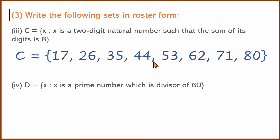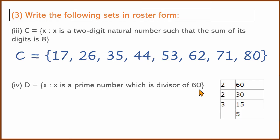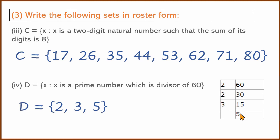Fourth: x is a divisor of 60. We use prime factorization. 60 = 2 × 2 × 3 × 5. Then 1, 2, 3, 4, 5, 6, 10, 12, 15, 20, 30, 60 are all divisors of 60.